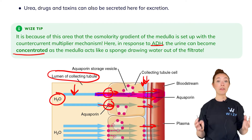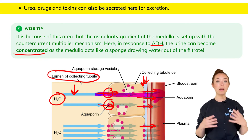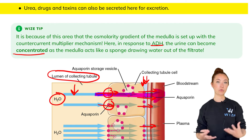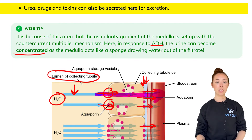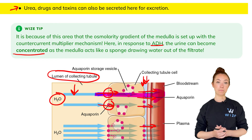Just a last note: urea and toxins can also be excreted at this point. The collecting ducts are able to excrete some of that into the filtrate for excretion.